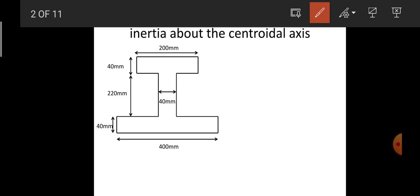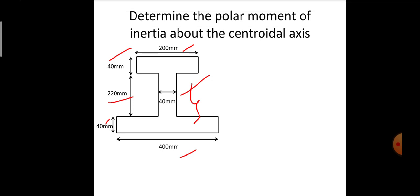We have been given an I-section wherein the top flange width is equal to 400 mm and flange depth is equal to 40 mm. The bottom flange width is equal to 400 mm and depth is equal to 40 mm. The web portion has a width equal to 40 mm and depth equal to 220 mm. This is the overall dimension of the I-shaped structure.